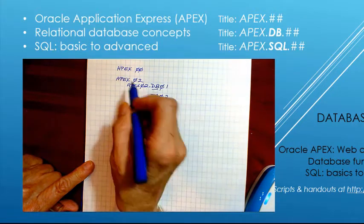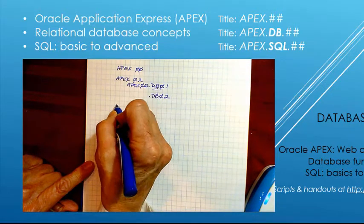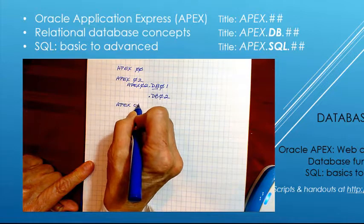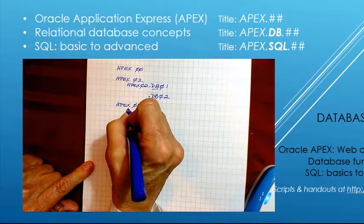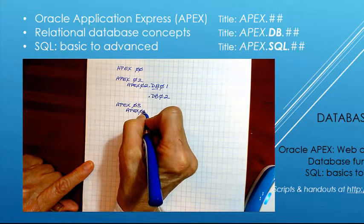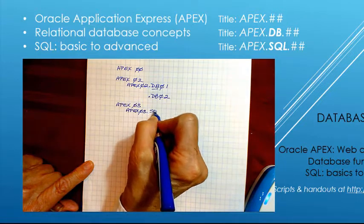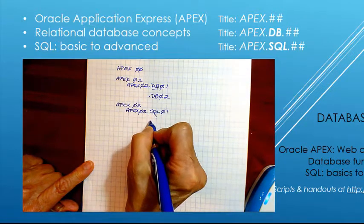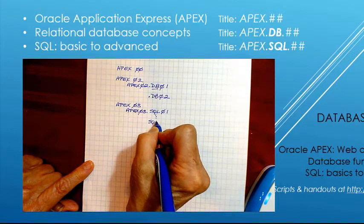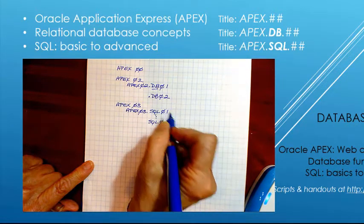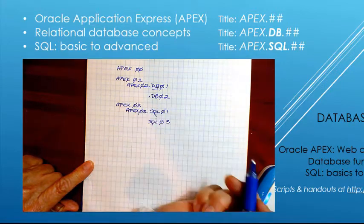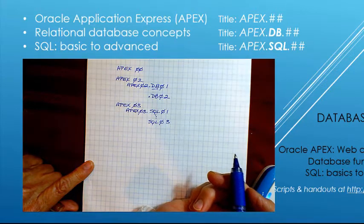The same thing would go if I have Apex 03, I have something specific I want to cover in SQL. That would be SQL 01 through SQL 03. So I would have 1, 2, 3, all of these relating to the Apex video 03.